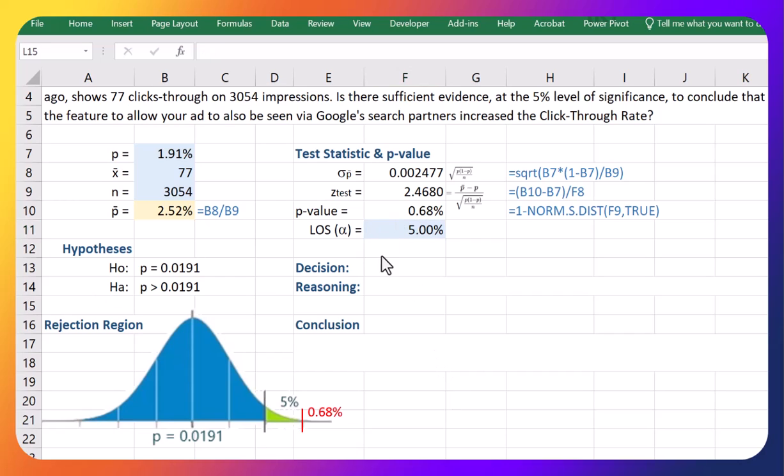Okay so that puts our test result here, of this 2.46, way in this upper tail here. So we need to be in this upper 5 percent to be in what's called the rejection region, or to mean that our actual result, this 2.52 percent, is high enough above the 1.91 to conclude the rate has increased.